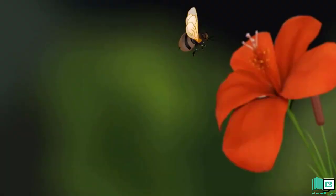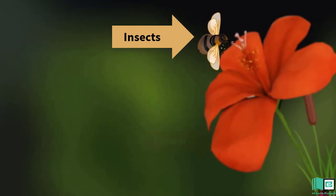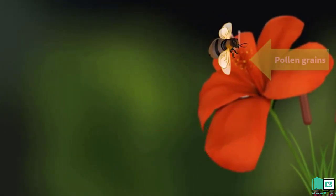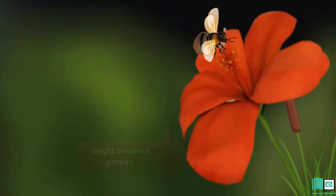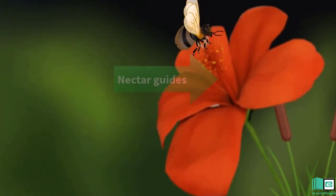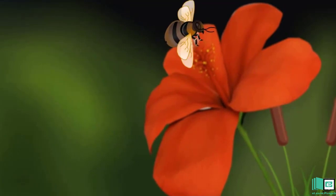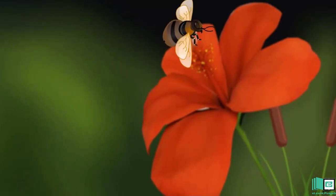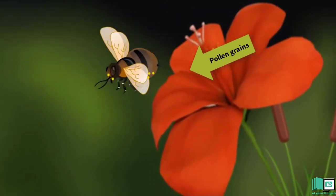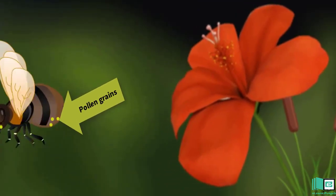Pollination by Animals: Insects and some other animals can also transfer pollen grains when they move from one flower to another. Bright colored petals, charming shapes, nectar guides, and pleasant smell attract animals towards flowers.